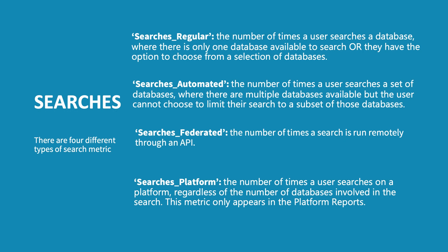There are four types of search metric in Release 5. Searches regular is the number of times a user searches a database where there is only one database available to search, or they have the option to choose from a selection of databases. Searches automated counts the number of times a user searches a set of databases where there are multiple databases available, but the user cannot choose to limit their search to a subset of those databases. Searches federated is the number of times a search is run remotely through an API. And searches platform is the number of times a user searches on a platform regardless of the number of databases involved in the search.